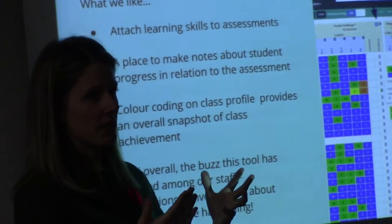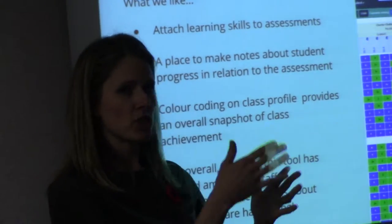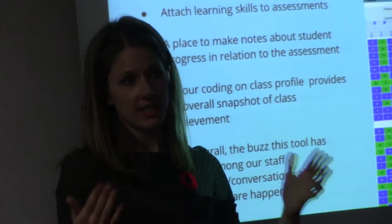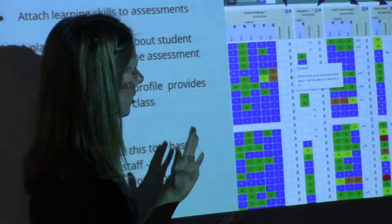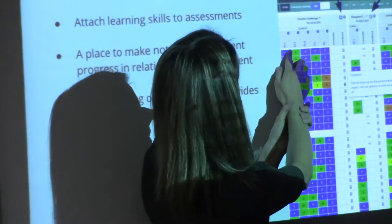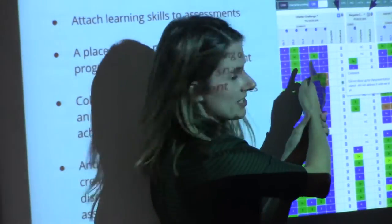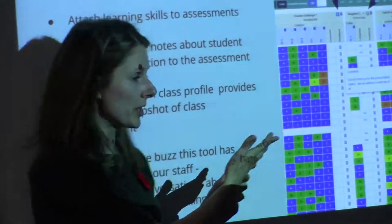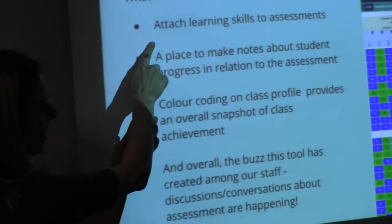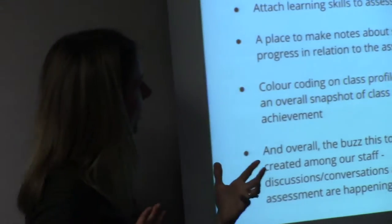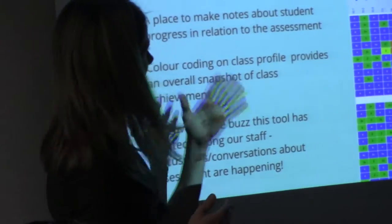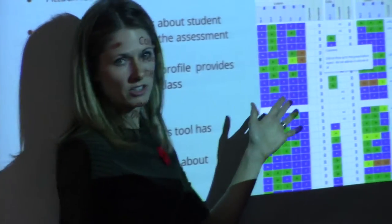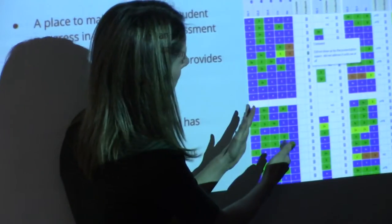When you go to input something, you have the option to select which essential learning is being assessed for that particular piece. For instance, my law class just did a charter challenge project, and it tracked essential learnings one, two, and three. I also wanted to assess the learning skills alongside that — it was a group project, so I assessed collaboration and responsibility. We like that we can tie a learning skill directly to a particular piece.